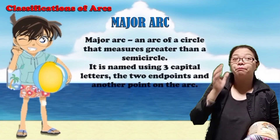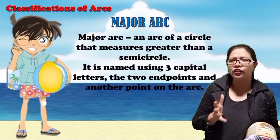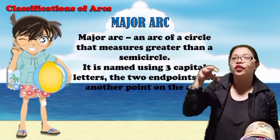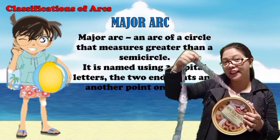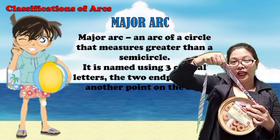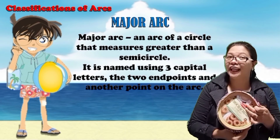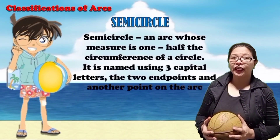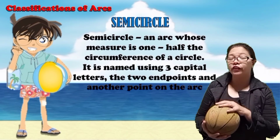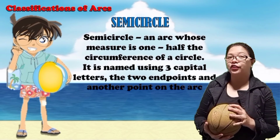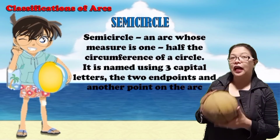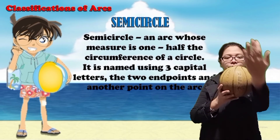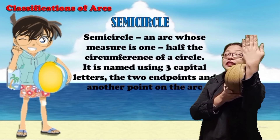Major arc is an arc of a circle that measures greater than a semicircle. It is named using three capital letters — the two endpoints and another point of the arc. Again, using a biscuit container and a necktie: this is the first endpoint and it covers more than half of the circle. Major arc. Semicircle is an arc whose measure is one half of the circumference of the circle. It is named using three capital letters — the two endpoints and another point on the arc. I have here a ball that represents a circle. I will cover half of the ball — this one is a semicircle.